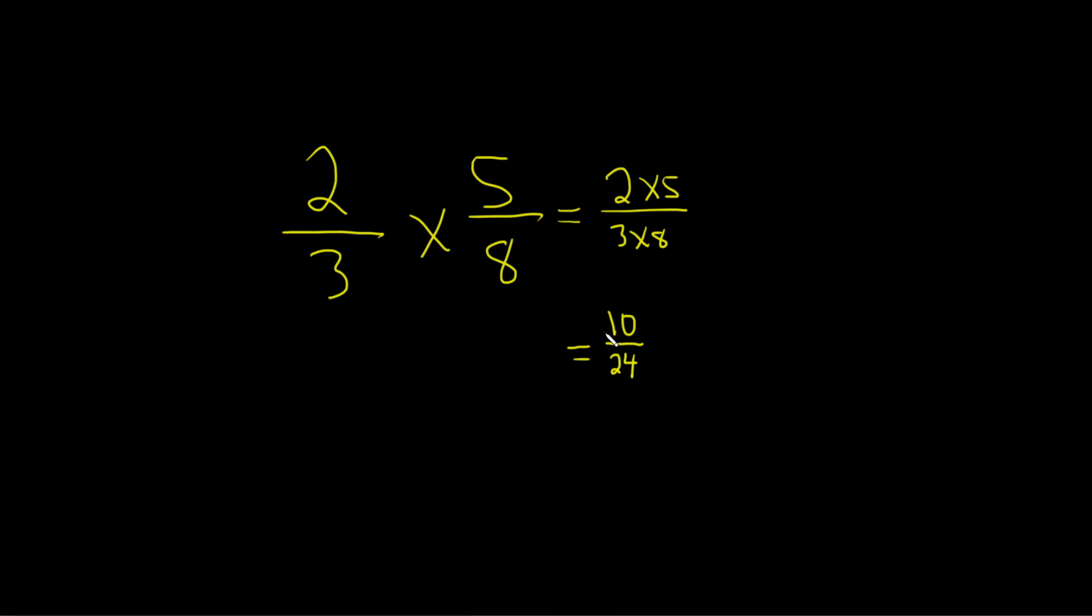2 goes into 10 5 times. So you draw a line and you put a 5. And 2 goes into 24 12 times. So you draw a line and put a 12. So the answer here would be 5 divided by 12.